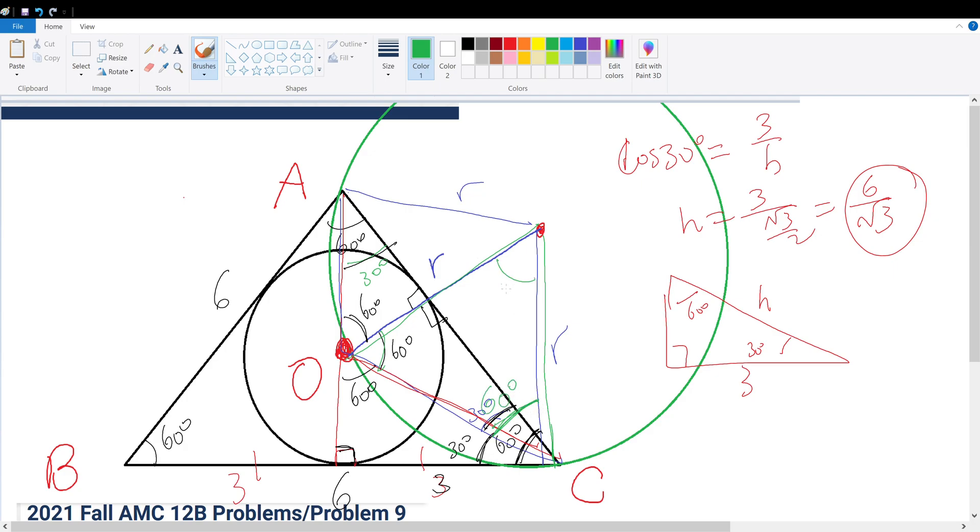And that must mean this must be 60 degrees right here. Because the total number of degrees in the triangle is 180, and 60 plus 60 plus 60 is 180. So we see this is actually an equilateral triangle, which makes solving this even easier.